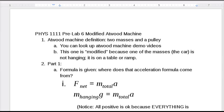Lab 6 is a modified Atwood machine. An Atwood machine is simply a two-mass and pulley system, and this one is modified because one of the masses is not hanging. It's on a table, or in the last example, it's on a ramp.